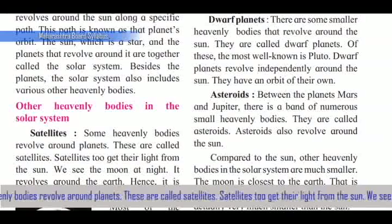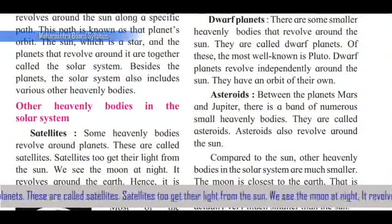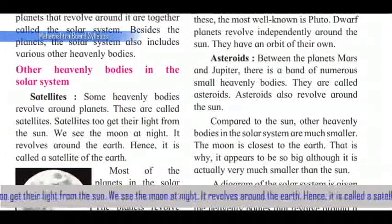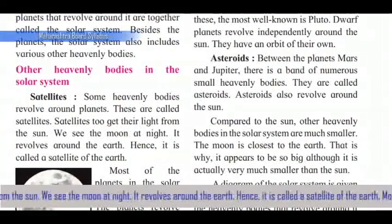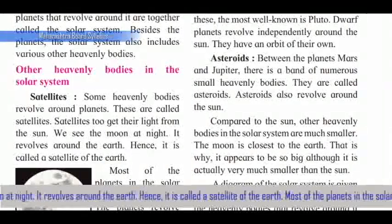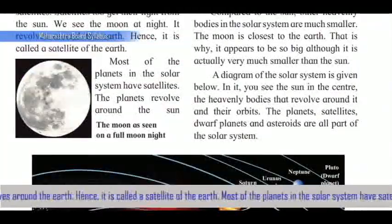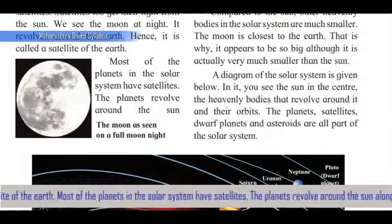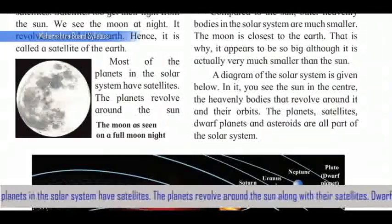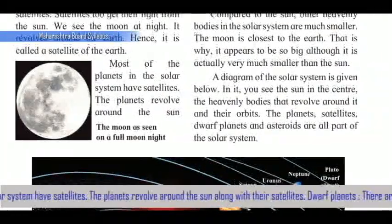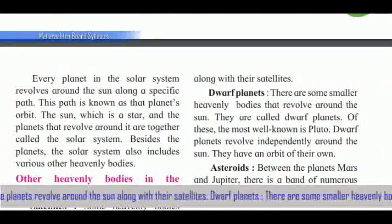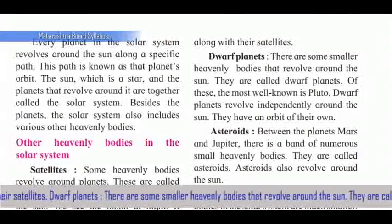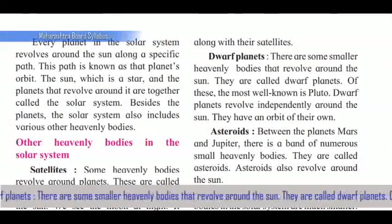Some heavenly bodies revolve around planets — these are called satellites. Satellites also get their light from the Sun. We see the Moon at night; it revolves around the Earth, hence it is called a satellite of the Earth. Most of the planets in the solar system have satellites. The planets revolve around the Sun along with their satellites.